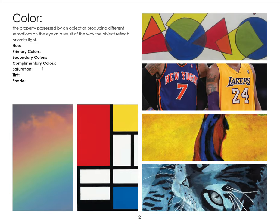Tint: add white to any color to create a tint of that color. Shade: add black to any color to darken it — for example, add black to blue and you get navy blue.